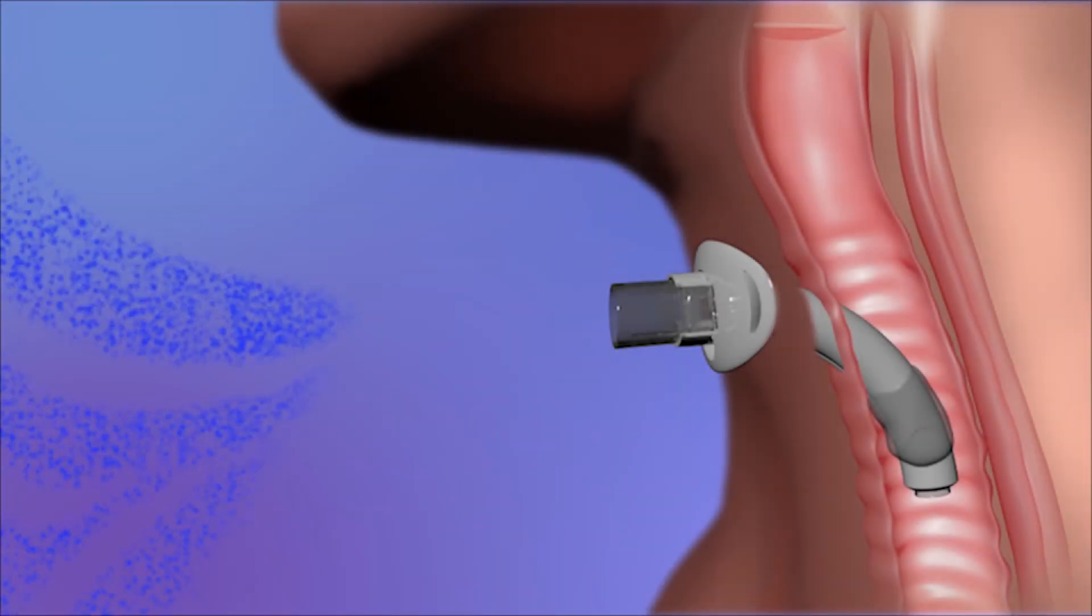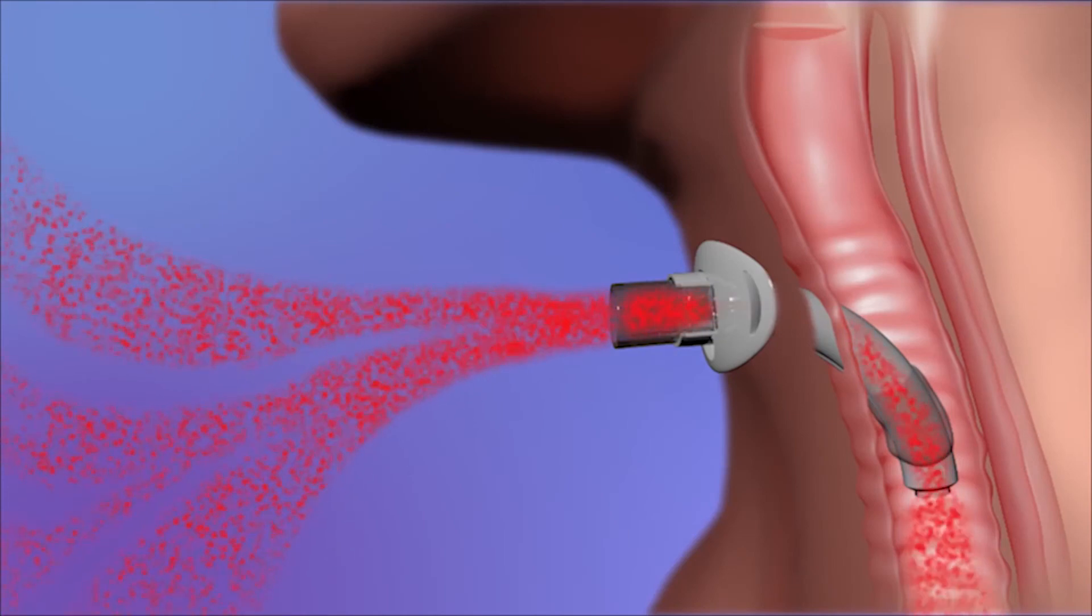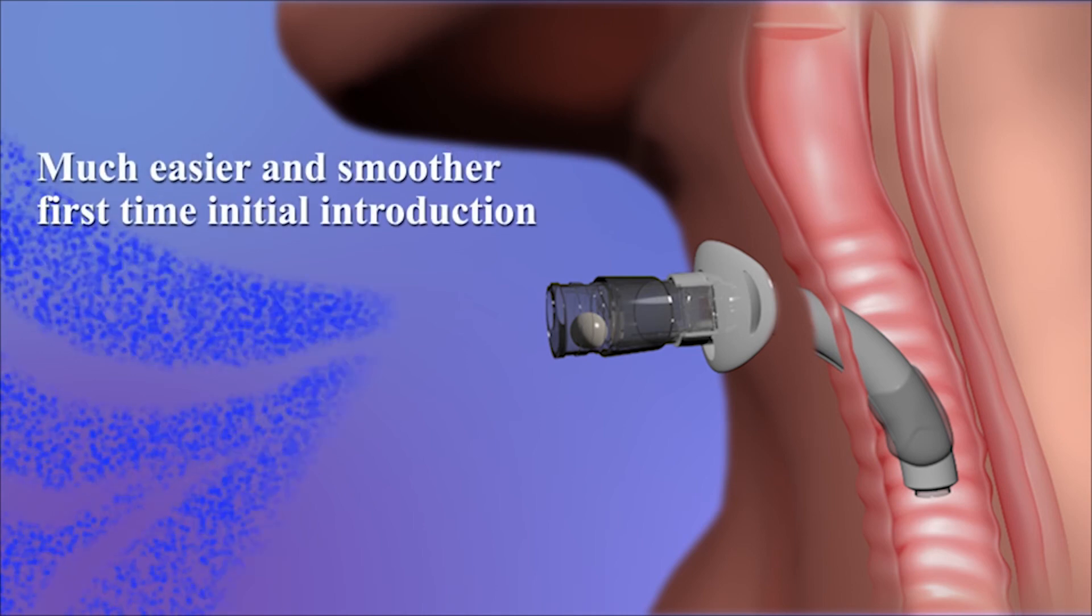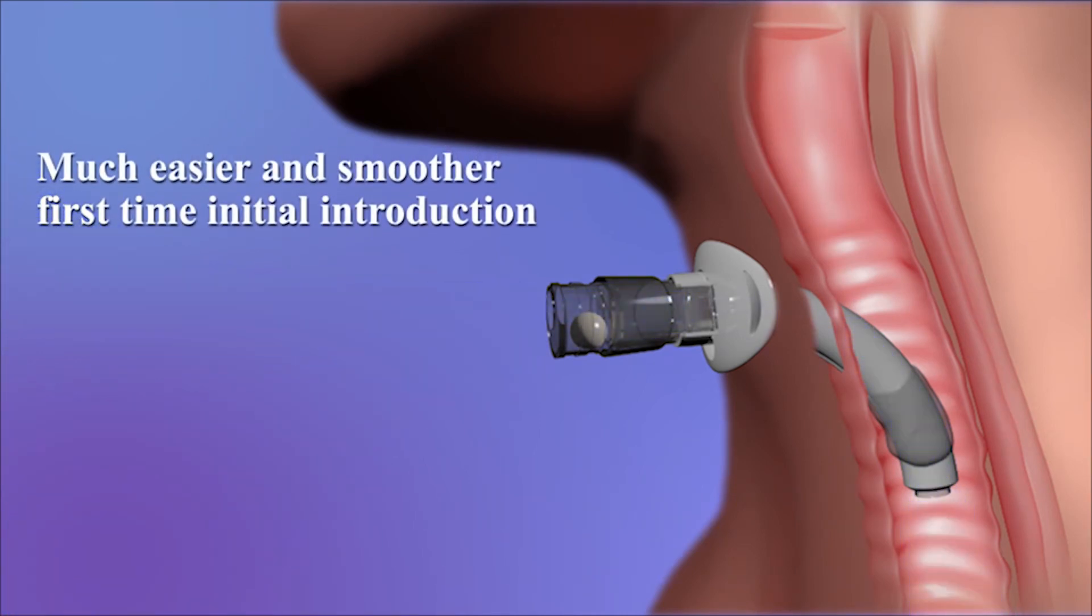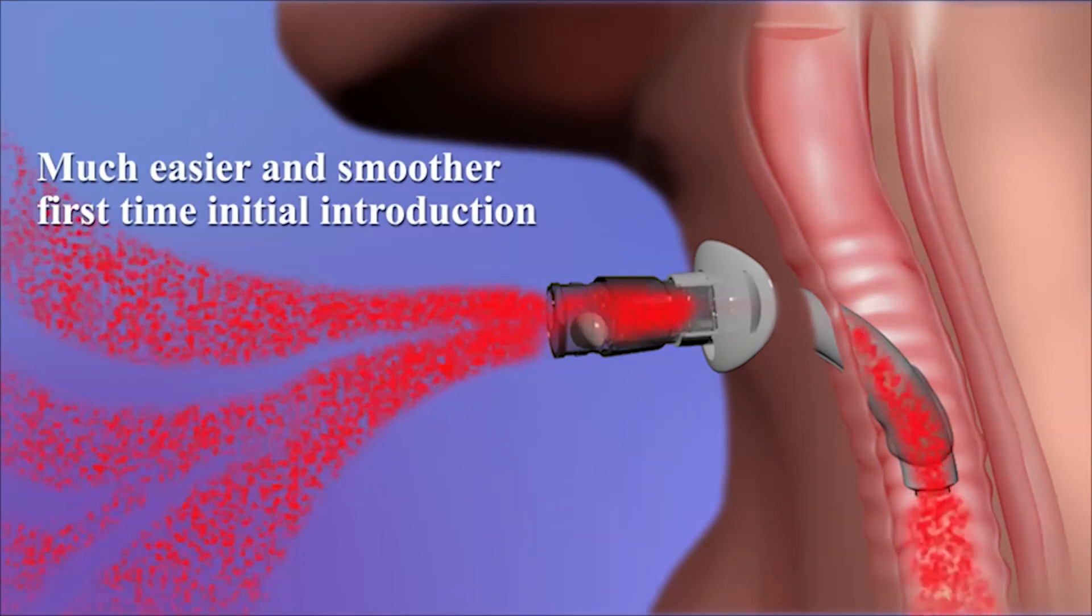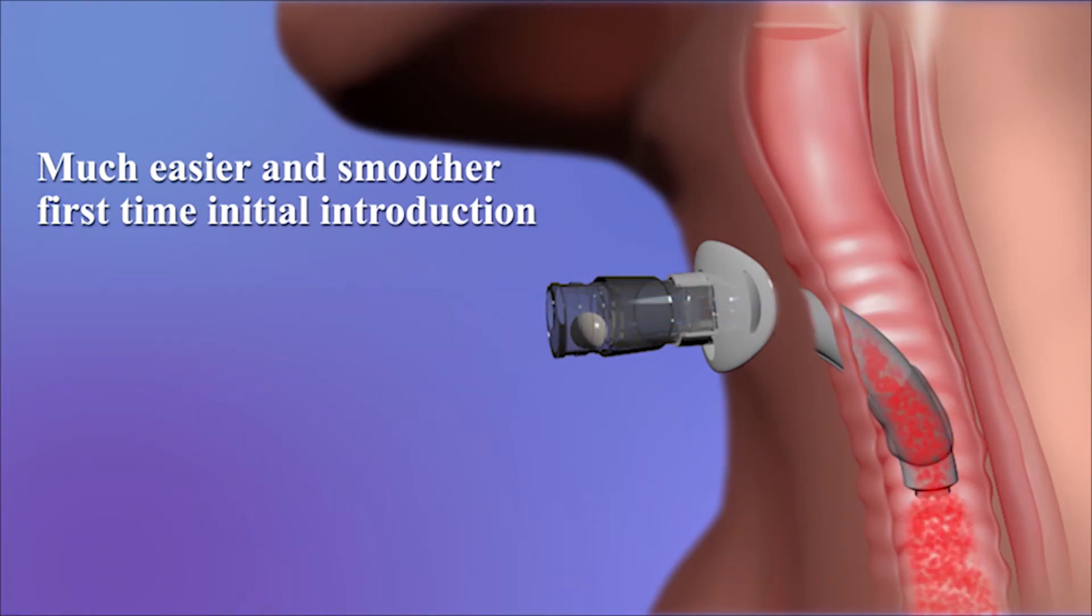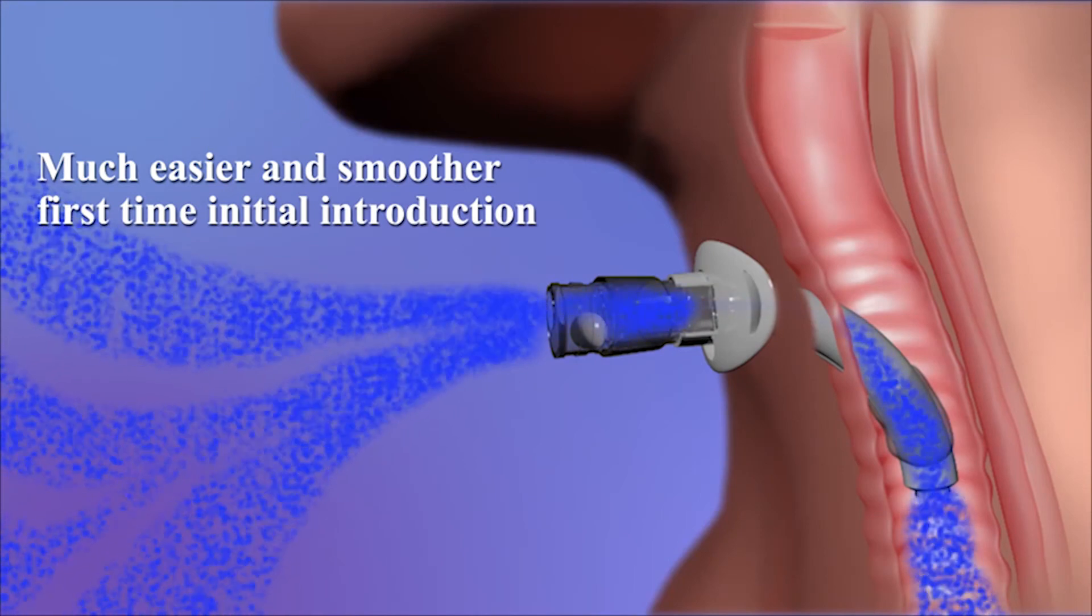One additional important feature of the bias open 12 o'clock mode is that it allows the speech language pathologist a much easier and smoother first time initial introduction of the Chicane speaking valve as compared to the flapper valve, as there is no feeling of panic caused by the bias closed membrane of the flapper valve.